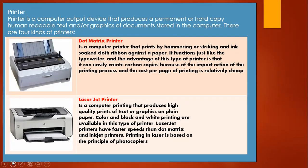Printers are output devices that produce a permanent hard copy of human-readable text and graphics of documents stored in the computer. There are four kinds of printers. The dot matrix printer is a computer printer that prints by hammering or striking an ink-soaked cloth ribbon against paper, functioning just like a typewriter. The advantage is that it can easily create carbon copies due to its impact action, and the cost per page of printing is relatively cheap.